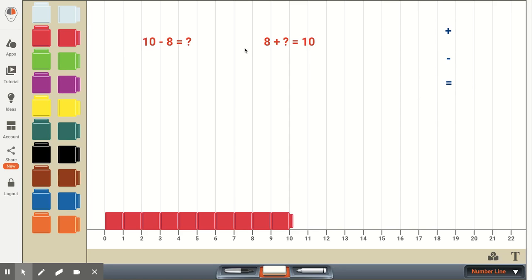So what I have here for an equation, or number sentence, for starters, is 10 minus 8 equals some unknown. And we want our first graders to understand that this would mean the same as 8 plus some unknown equals 10.